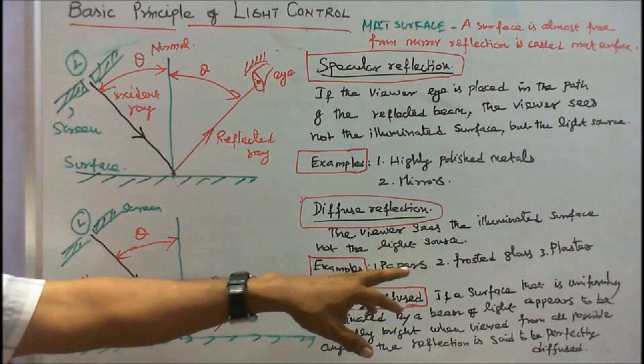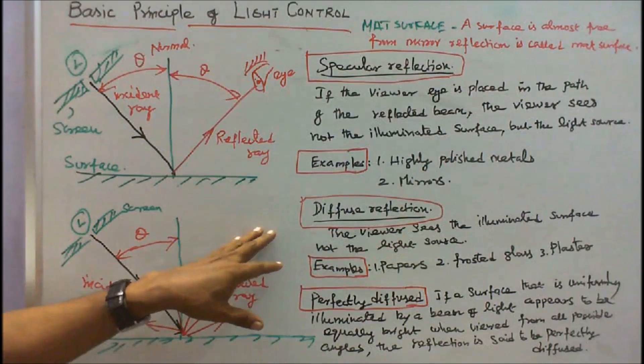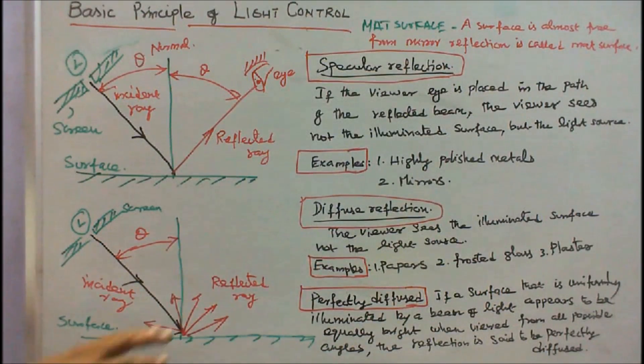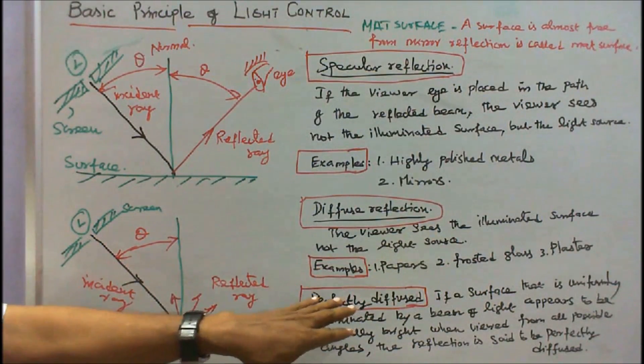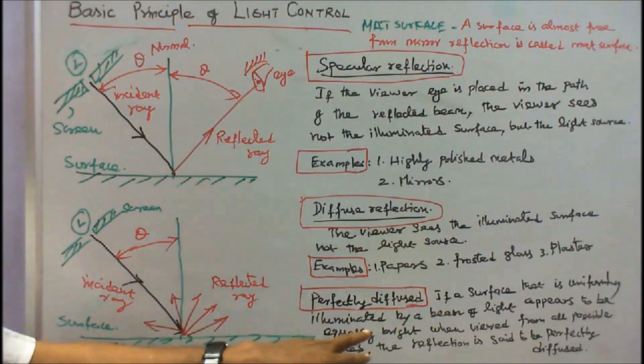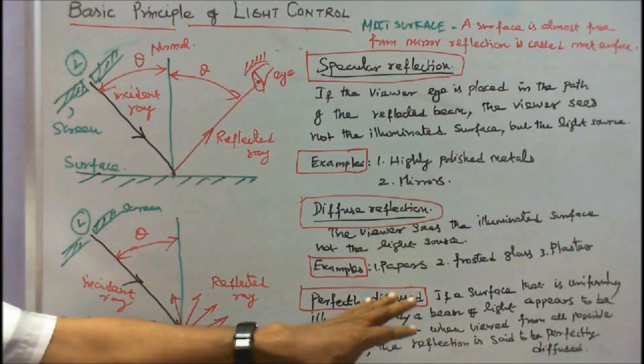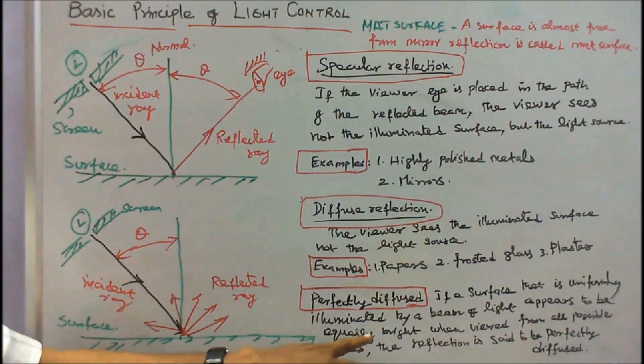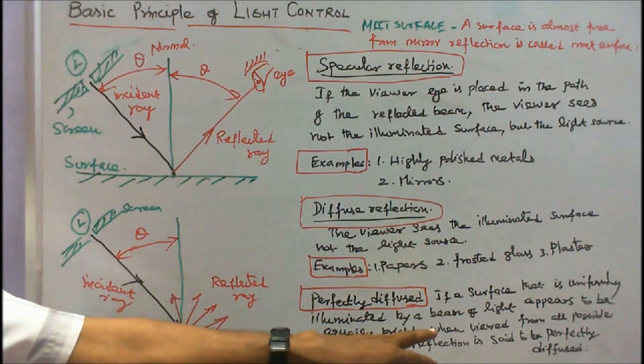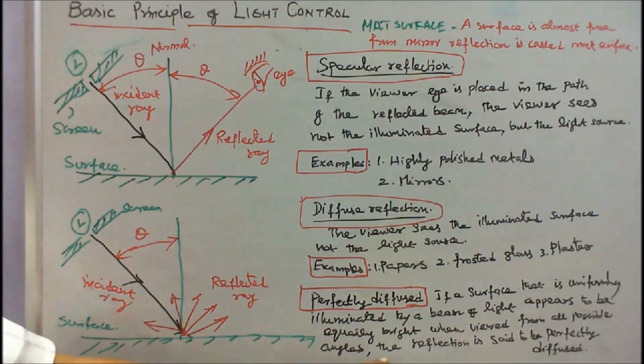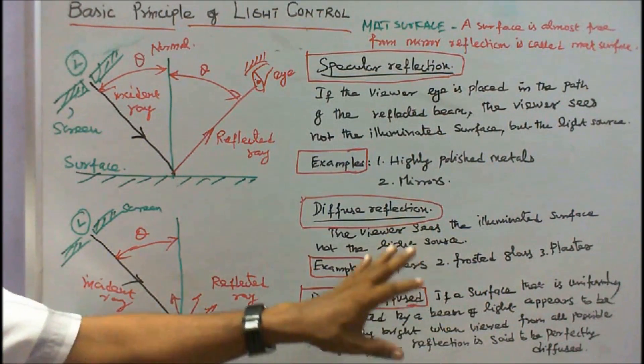Paper, frosted glass, plaster are the best examples of diffuse reflection. The third is perfectly diffused. If a surface that is uniformly illuminated by a beam of light appears to be equally bright when viewed from all possible angles, the reflection is said to be perfectly diffused.